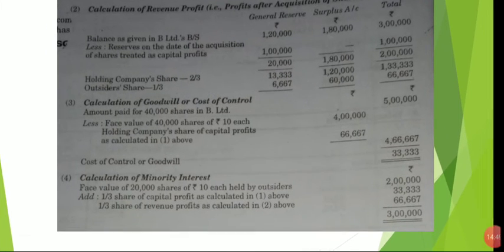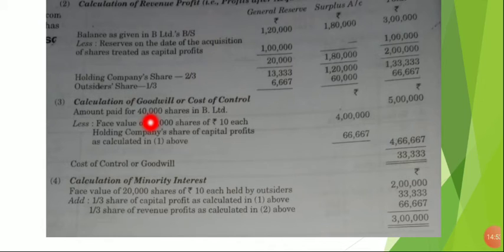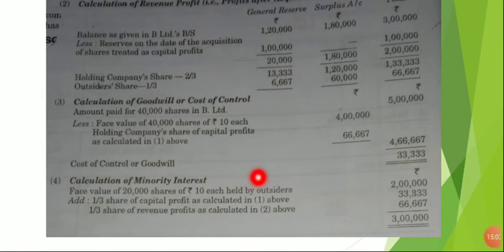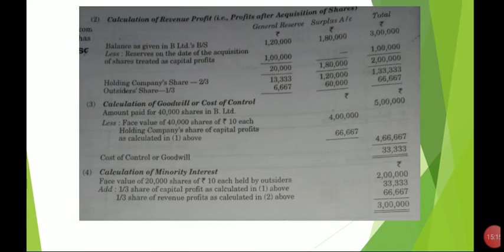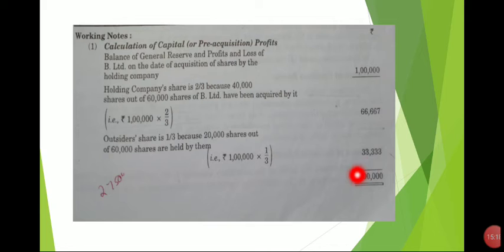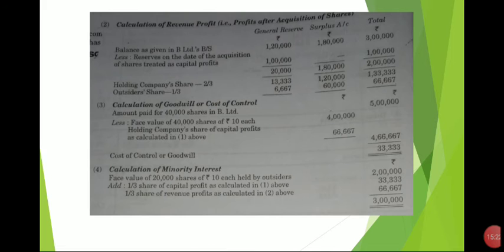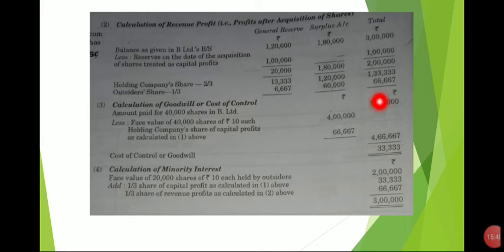Calculation of Minority Interest. If you have 20,000 shares held by outsiders, those are the minority. Phase value of 20,000 shares of Rs. 10 held by outsiders: 2 lakh. Pre-acquisition profit: 60,000 shares of capital profit at 1,300. Revenue profit: 30,000. Share of revenue profit at 1,300. That gives the total minority interest figure.